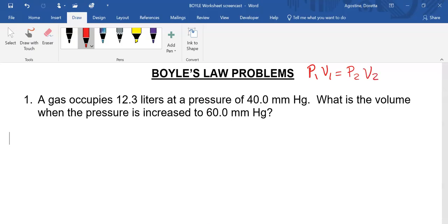So let's read this problem and identify variables. A gas occupies 12.3 liters at a pressure of 40. What is the new volume when the pressure is increased to 60? So identifying variables, we have V1 is 12.3 liters at a pressure, P1, of 40.0 millimeters.